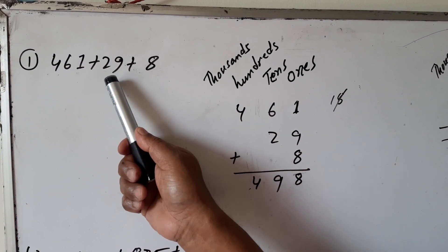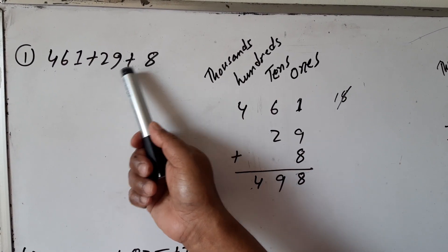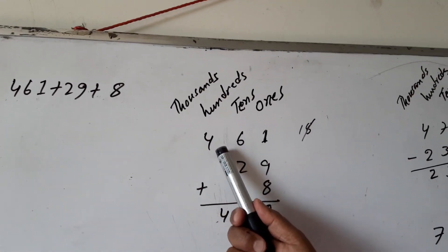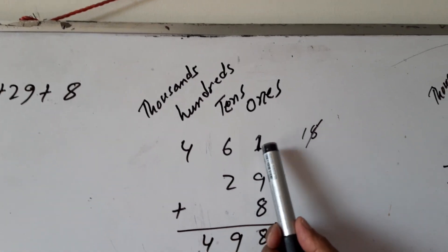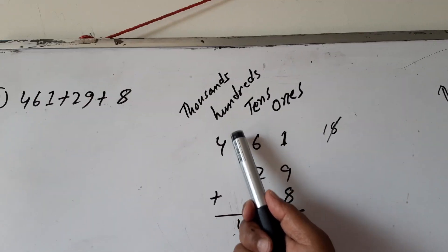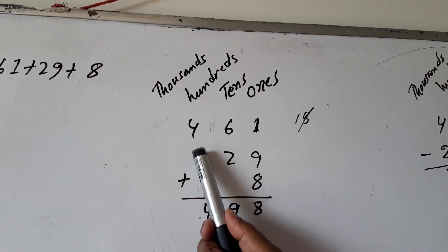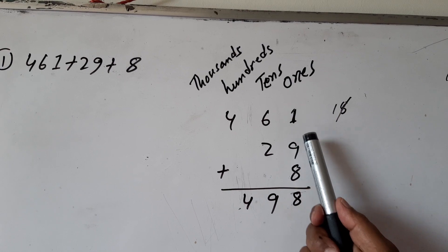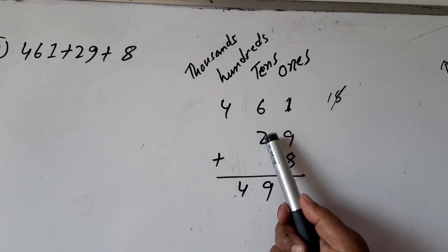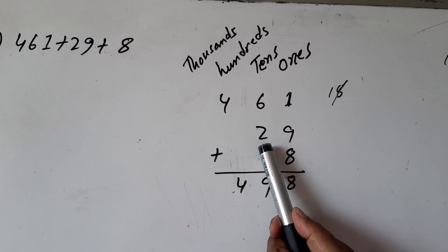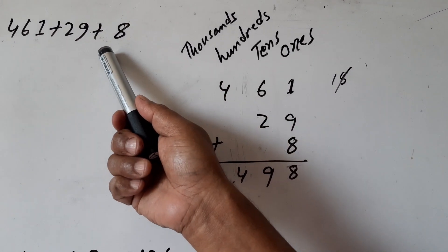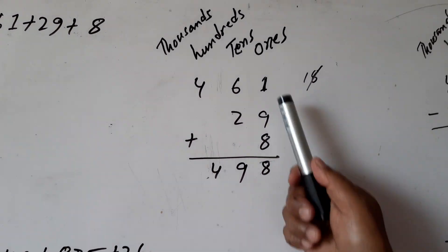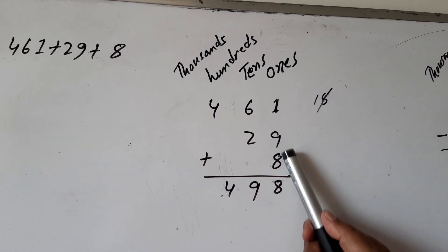461 plus 29 plus 8. For 461, we have to write 1 in the 1s place, 6 in the 10s place, and 4 in the 100s place. When we write 29, 9 will be in the 1s place and 2 will be in the 10s place. And if we write 8, 8 will be in only the 1s place. We have to maintain the place.